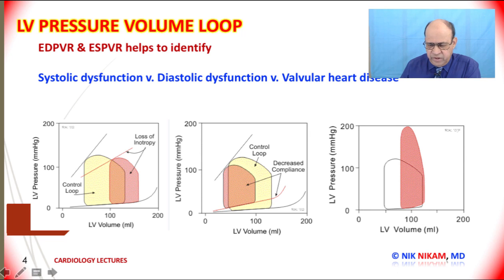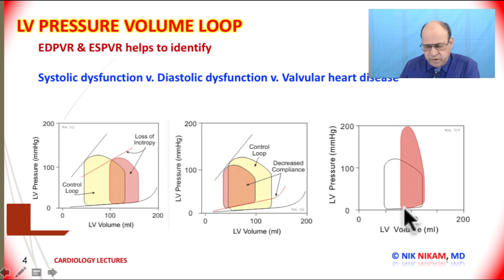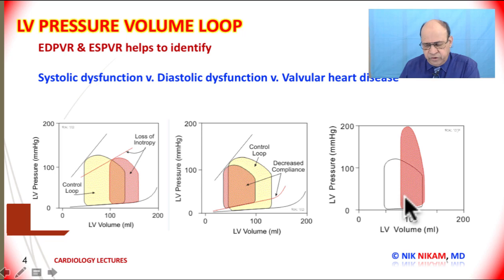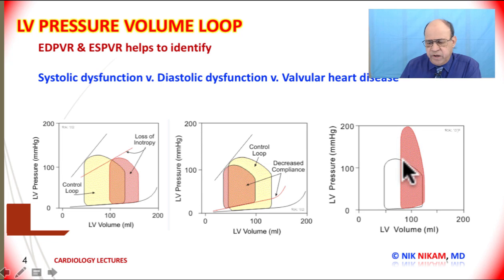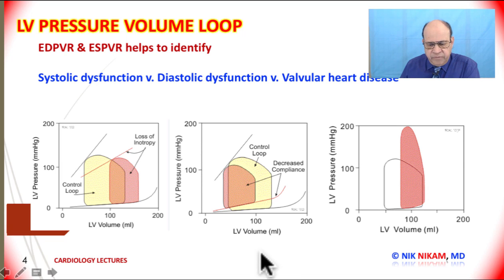This is a pressure volume loop in a patient with aortic stenosis. Aortic stenosis behaves somewhat like hypertrophic cardiomyopathy, but there are differences. The slope is steeper than in a normal ventricle, but the pressure is significantly higher in aortic stenosis — because of the narrowing of the aortic valve, the pressure generated in the left ventricular cavity must greatly exceed normal to get blood across the stenotic valve. There is also a reduced stroke volume.